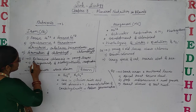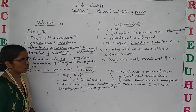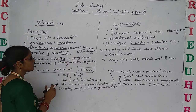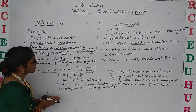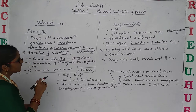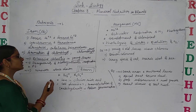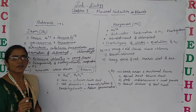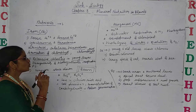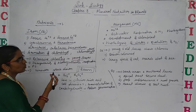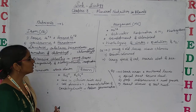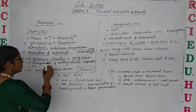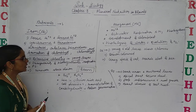Let's discuss the deficiency symptoms. Iron causes extensive chlorosis in the young leaves. Chlorosis means the chlorophyll pigment is damaged and leaves become yellowish in color, meaning they are not able to do photosynthesis properly. Without chlorophyll, leaves become pale yellow and the rate of photosynthesis is retarded. The main point is extensive chlorosis in young leaves.